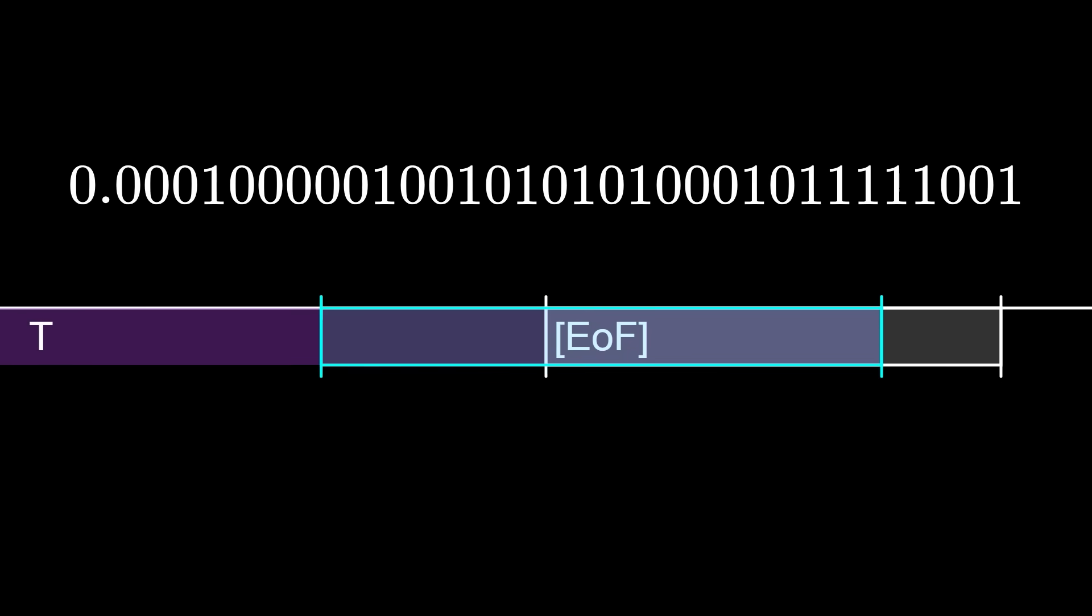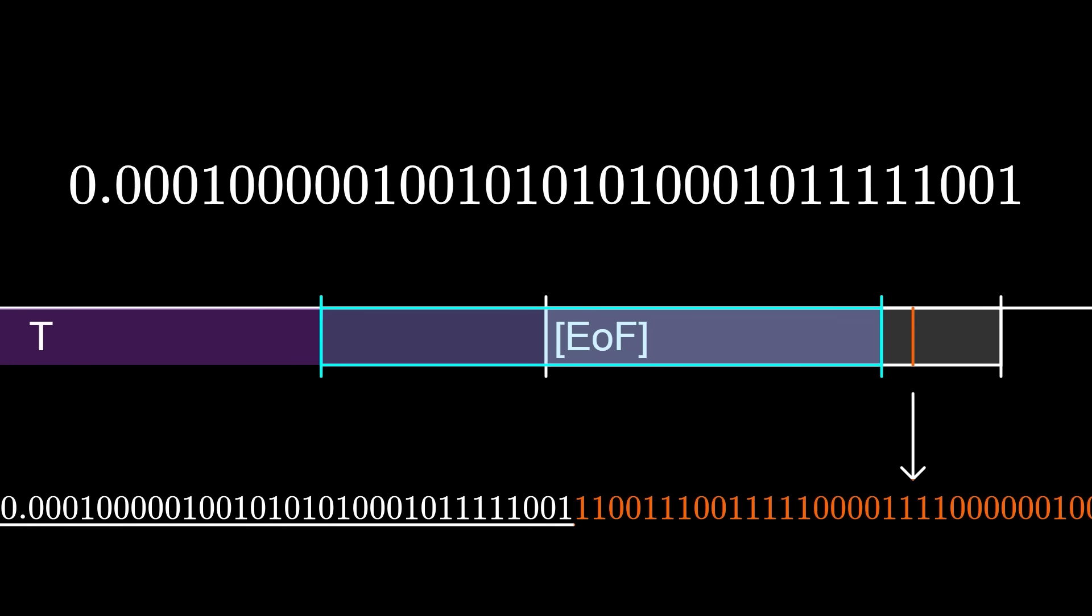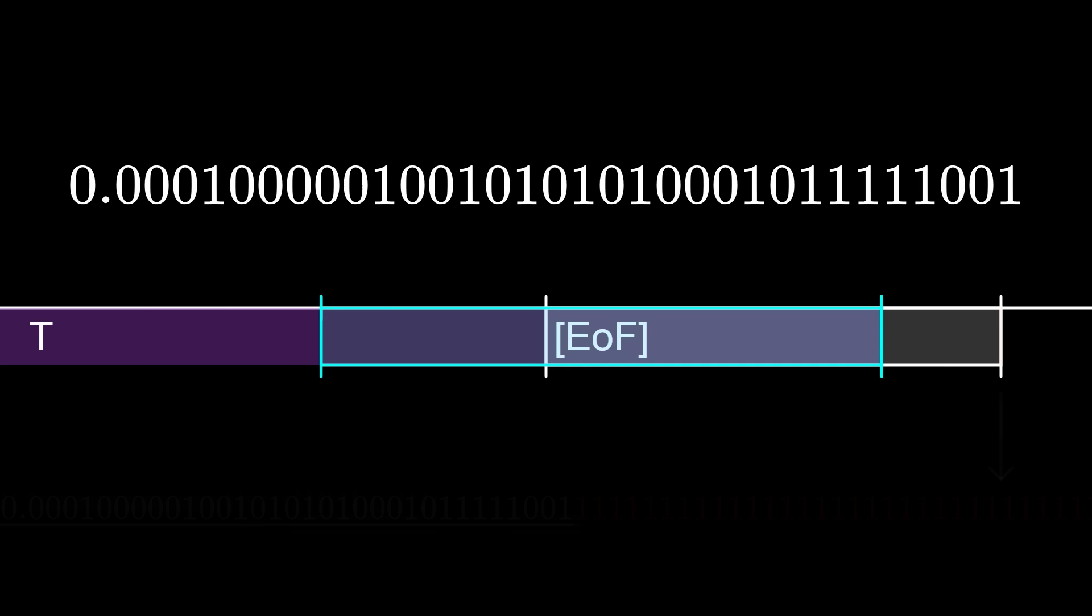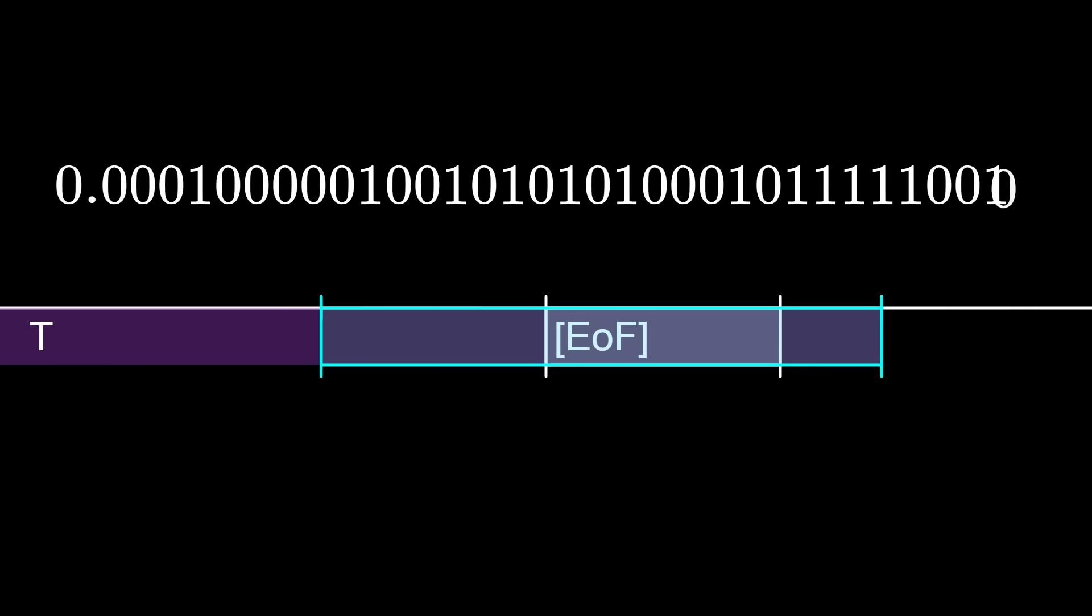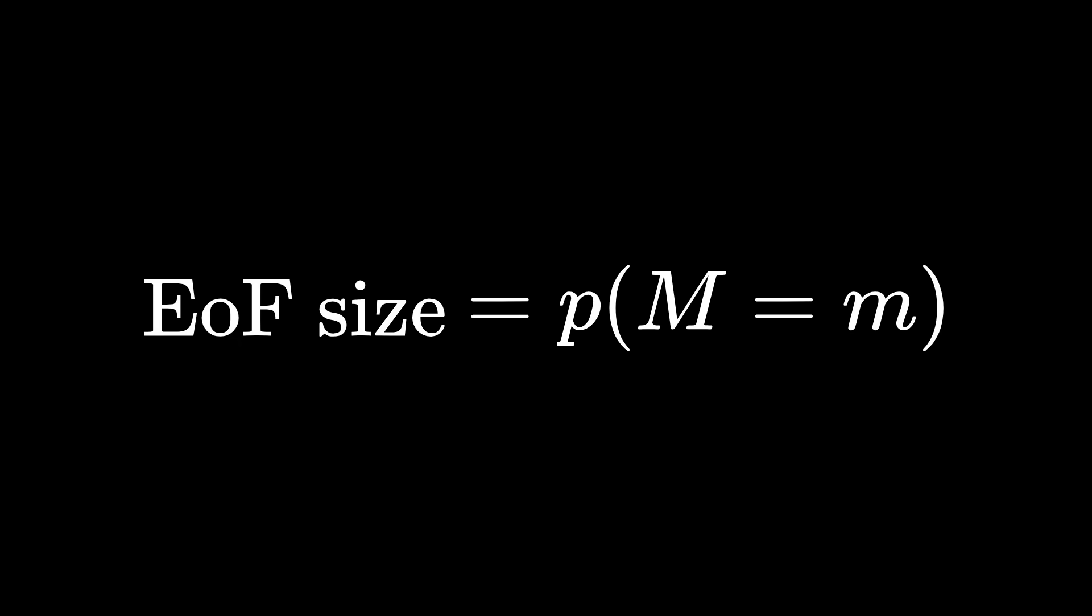Let's look at the number of bits we use to encode a message. Each bit halves our code space, this range that includes all the numbers whose binary expansion starts with this code. And we stop when the code space is within the message's range. So we stop when one-half to the power of n, where n is the number of bits, shrinks to the size of the section. So the number of bits is negative log base two of that. If we want the number of bits to equal the information content of the message, we need to make the size of any end of file section equal to the probability of whatever message it's specifying.